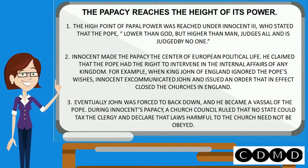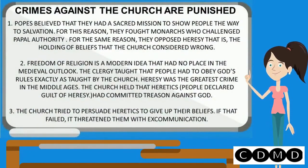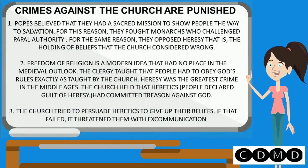Innocent III made the Papacy the center of European political life, claiming that the Pope had the right to intervene in the internal affairs of any kingdom. When King John of England ignored the Pope's wishes, Innocent excommunicated John and issued an order that in effect closed the churches in England. Crimes against the church were punished because popes believed they had a sacred mission to show people the way to salvation. They opposed heresy — the holding of beliefs the church considered wrong. Heresy was the greatest crime in the Middle Ages, and heretics were held to have committed treason against God.